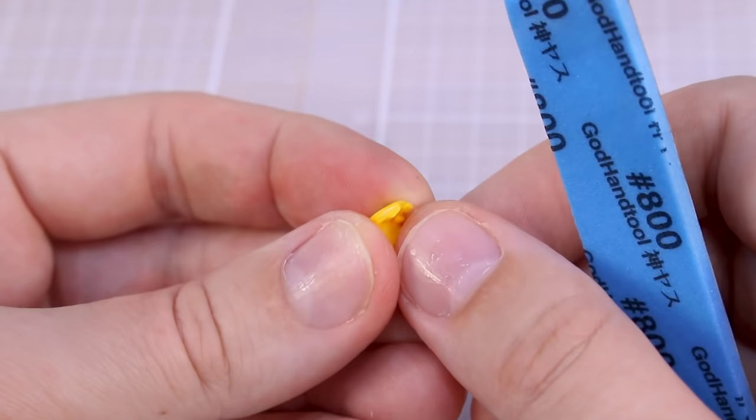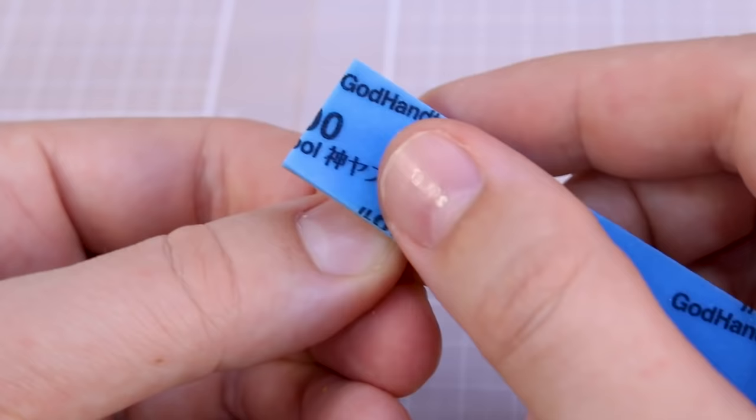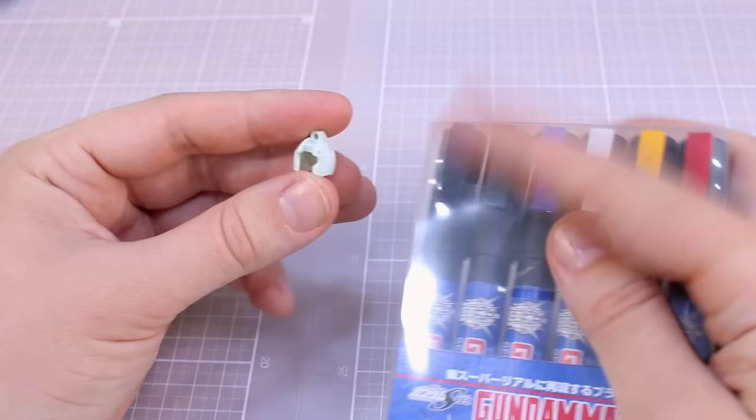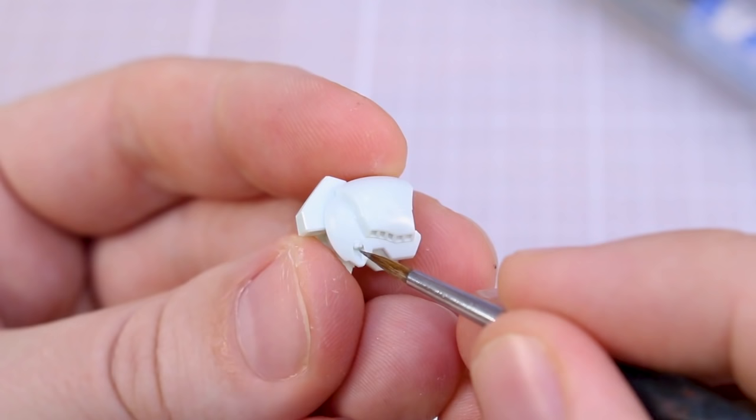Next for the eyepieces, we're going to lightly sand these and then later we'll spray this with a little bit of gloss top coat, and that'll make them have a nice, more shiny or glowing look to them. Next up, we're going to start detailing the head here, starting with the tiny little Vulcans at the top of the head, in which case we're going to be using the gray marker here from this Gundam Seed Gundam Marker set.